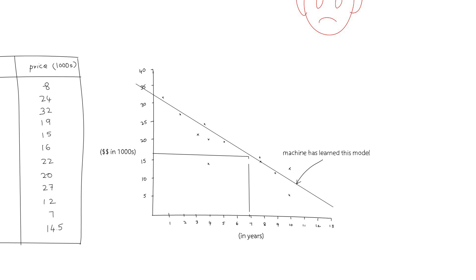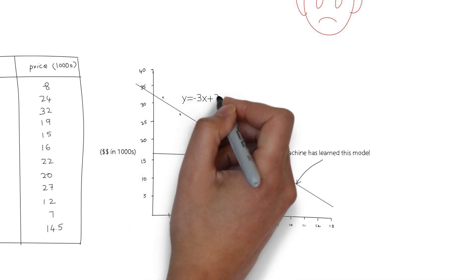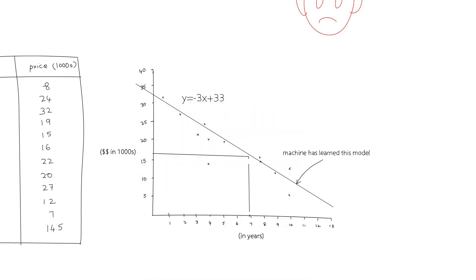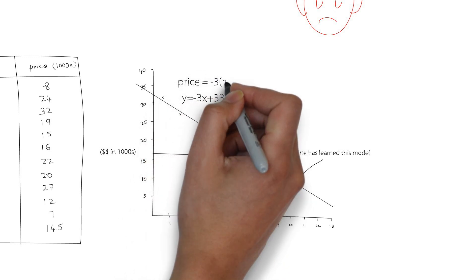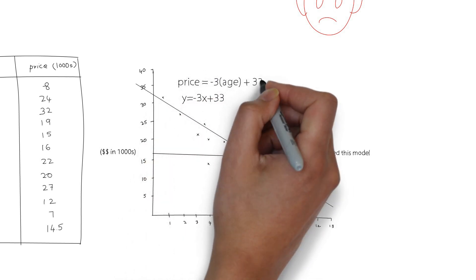Also, the slope of the line is about negative 3. So the equation of this line is y equals negative 3x plus 33. Or in other words, the price is equal to negative 3 times the age of the car plus 33.